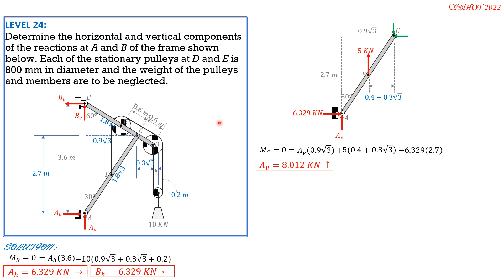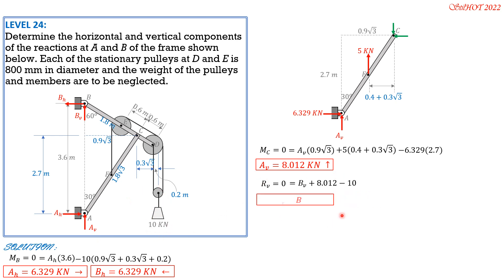For B_V, consider the entire system with summation of vertical forces equal to zero: B_V plus A_V minus 10 kN equals zero. Substituting A_V equals 8.012 kN gives B_V equals 1.988 kN upward. That completes this second-to-last problem.